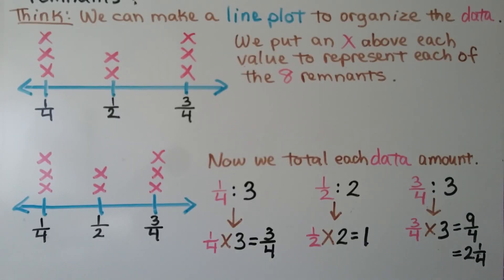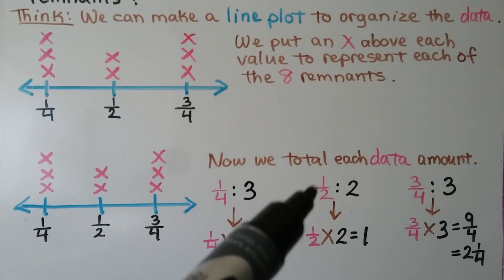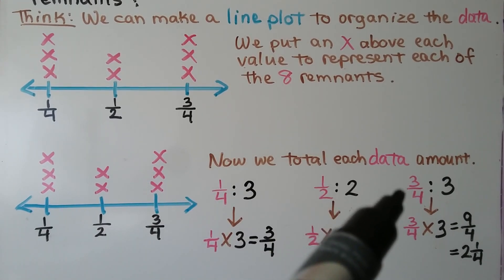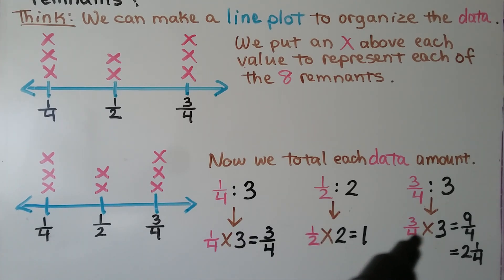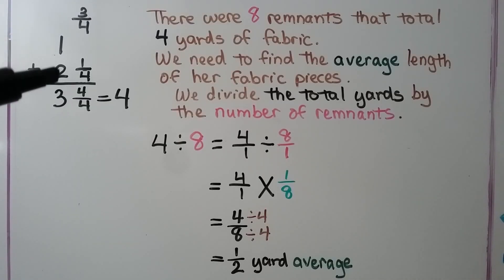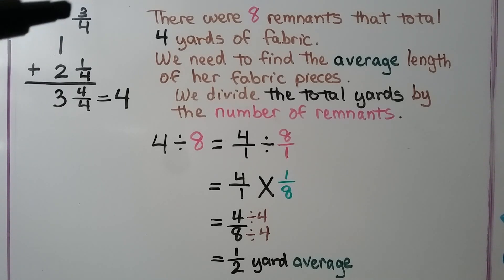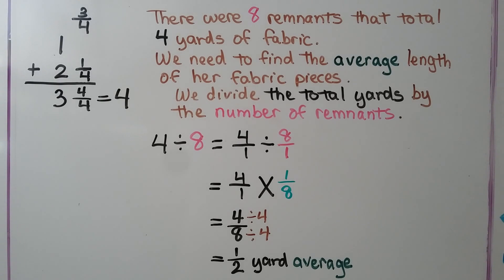Now we total each data amount. We've got three one-fourths, two one-halves, and three three-fourths. One-fourth times three is three-fourths. One-half times two is one whole. And three-fourths times three is nine-fourths, which simplifies to two and one-fourth. We add the subtotals: three-fourths, one, and two and one-fourth. Three-fourths and one-fourth makes four-fourths. We add the whole numbers: one plus two equals three, and three and four-fourths equals four. There were eight remnants that total four yards of fabric.